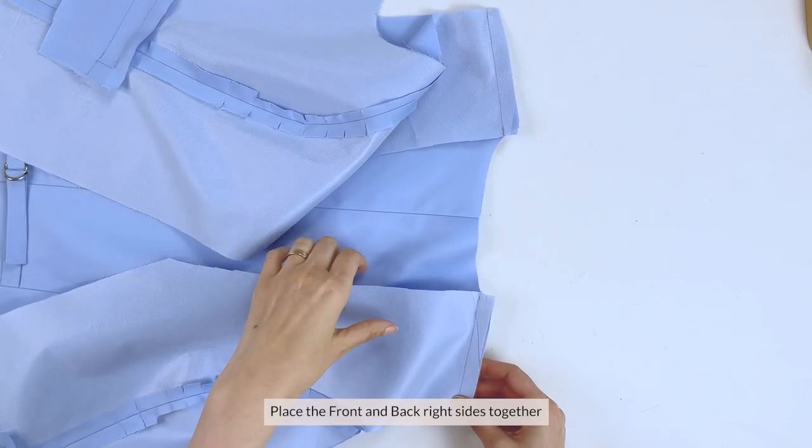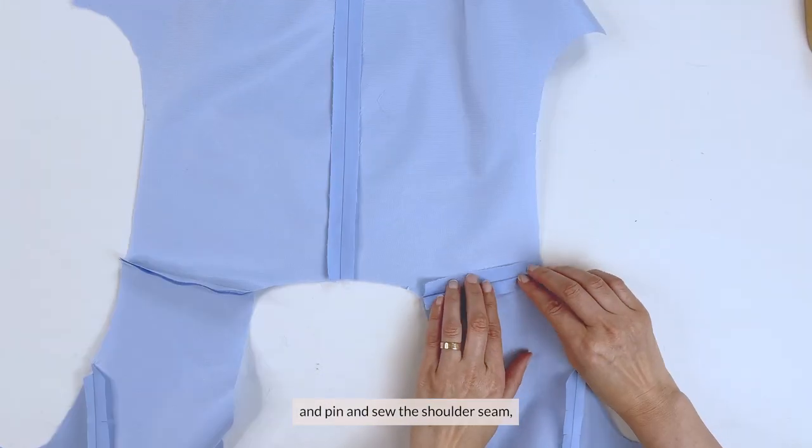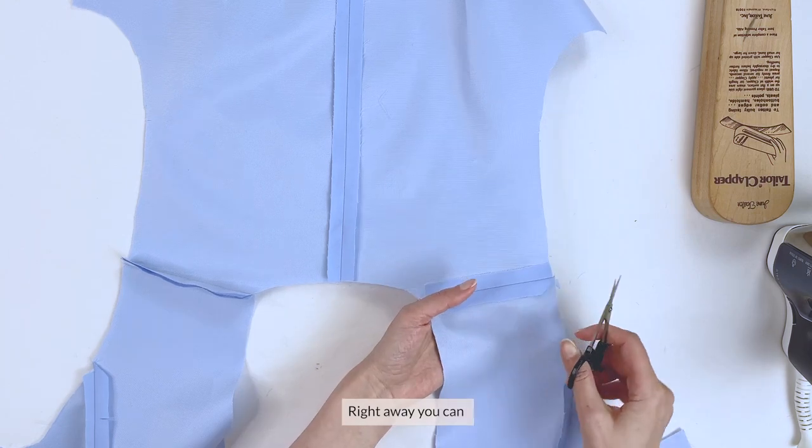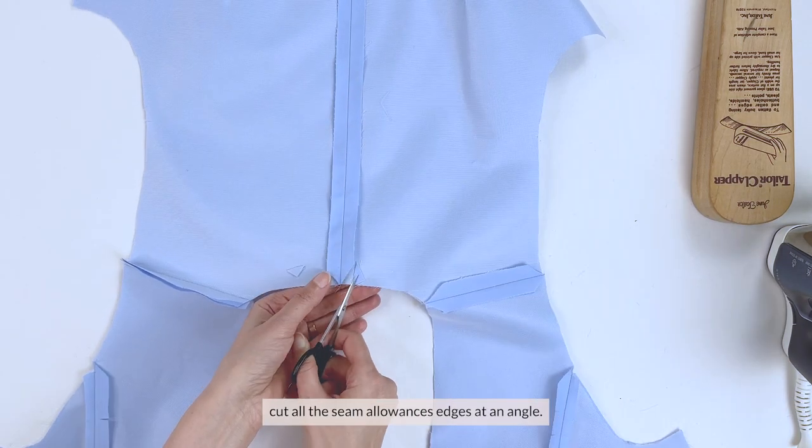Place the front and back right sides together and pin and sew the shoulder seam then press. Right away you can cut all the seam allowance edges at an angle.